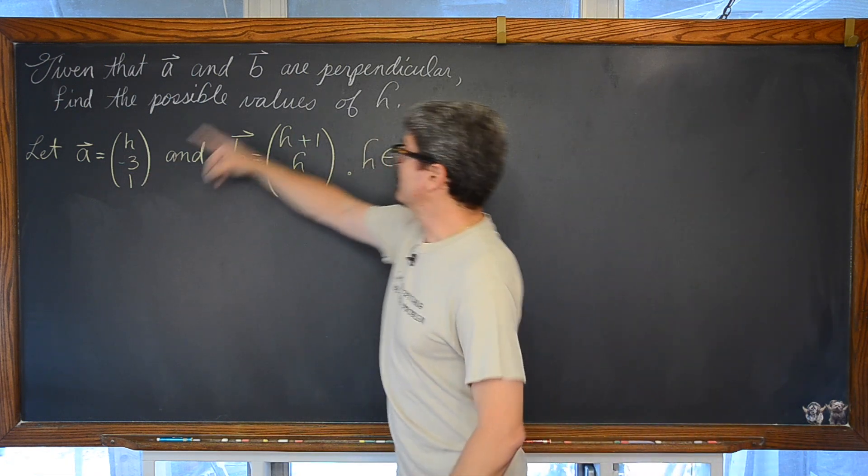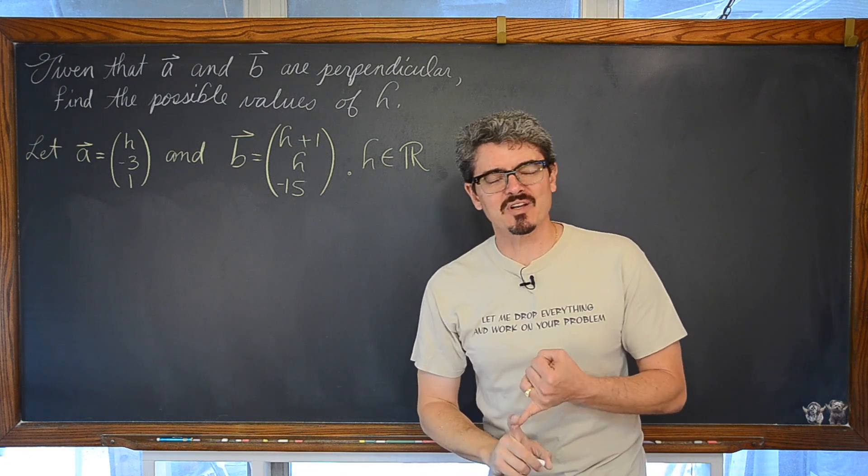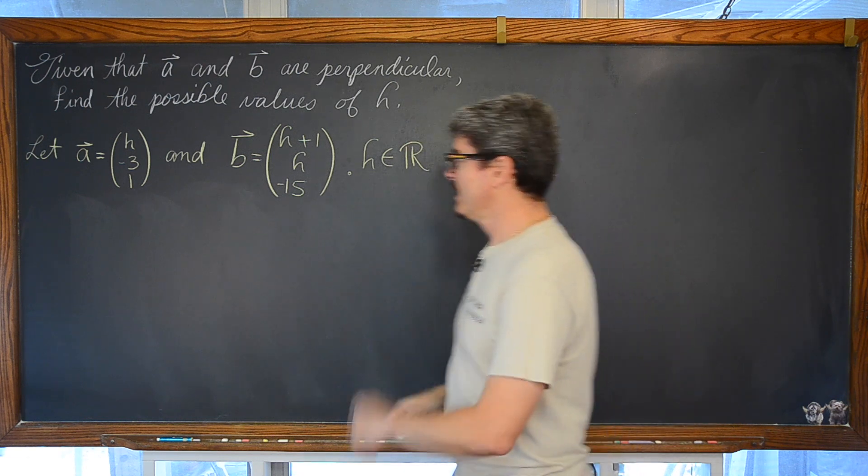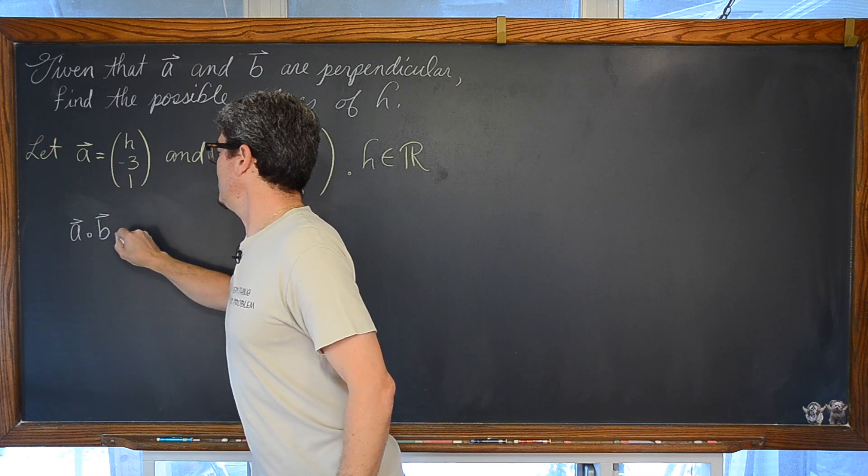We are told again that these vectors are perpendicular. So, now we completely understand that, hopefully, that the dot product has to be equal to zero, if that is the case. So, vector a dotted with vector b, well, that is going to be the result of taking the components along the x axis and multiplying them together.